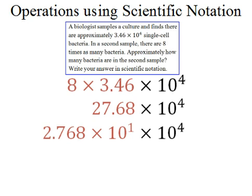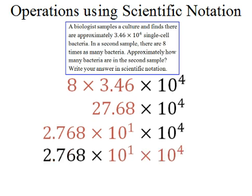27.68 can be rewritten as 2.768 times 10 to the 1st. Now notice that we've got 10 to the 1st times 10 to the 4th. So we've got two powers of 10 that are multiplying, so let's handle that next.